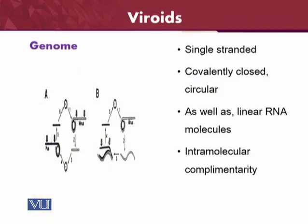What about its genome — the complete genome? We can take the example of A and B. As we already see, they are single-stranded RNA and they are covalently bonded with each other. And of course, if they are covalently bonded, they are circular structures. However, some of them are linear RNAs as well — linear molecules are also present in the viroids.